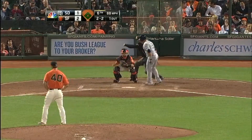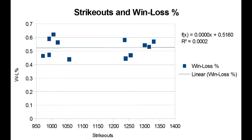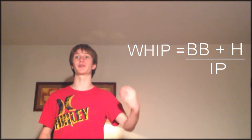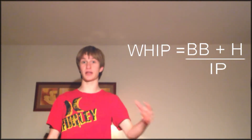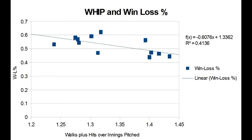Now let's move on to pitching statistics. The first is strikeouts — good old-fashioned strikeouts. Here are the Giants' total strikeouts from 2002 to 2013, and when we put that on the graph, there is even less correlation than fielding percentage. Strikeouts are not often relied upon since there are so many other ways to assess pitching. So we're going to look at WHIP, or walks plus hits per innings pitched — how many base runners a pitcher allows per inning. WHIP describes the winning percentage better than any other statistic so far, with almost a 0.4 r-squared value.